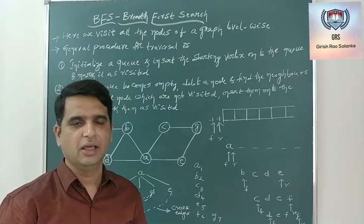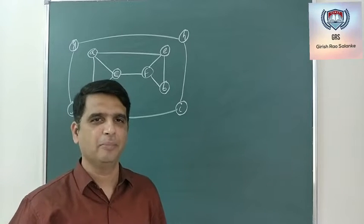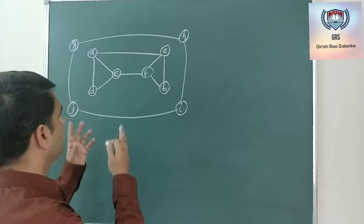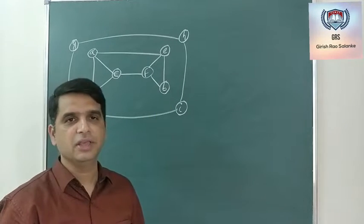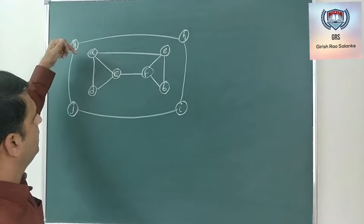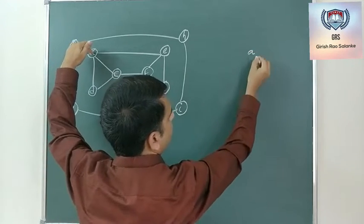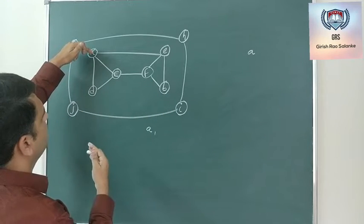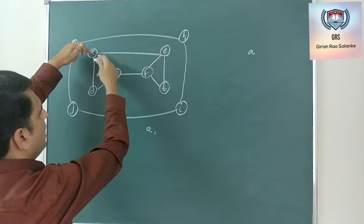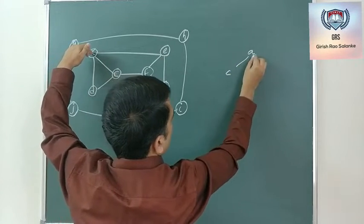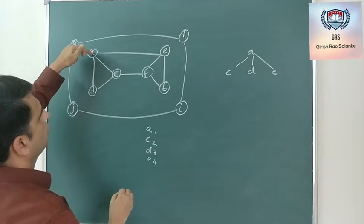Let us take one more example before going to the pseudocode. This second graph has two components and 10 vertices. The objective is to visit all 10 vertices using BFS traversal. Starting with vertex A — A is the first vertex visited, so it is A1. A is put onto the queue, and the neighbors of A which are not visited are C, D, and E — in alphabetical order, C is second, D is third, and E is fourth.